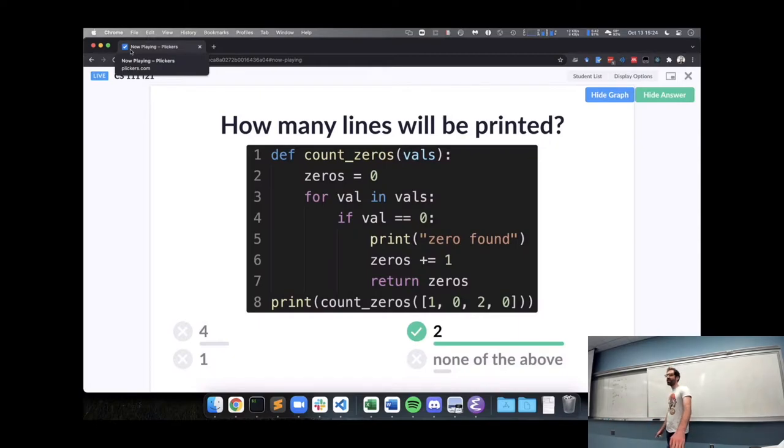Exactly. This function has an indentation problem. We want the loop to go through all the numbers in the list, but we know return - once we get to return, it ends the function. So we want return to be unindented to be outside our for loop, so we'll go through all the numbers in the list, check all of them whether they're zero, and then only after the loop do we want to return zeros.